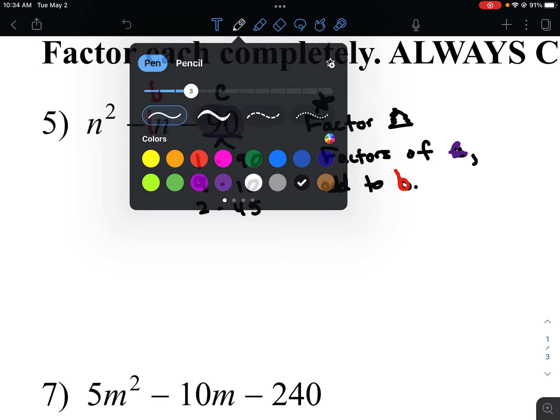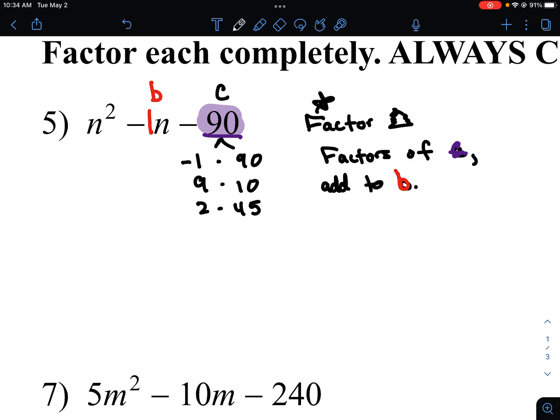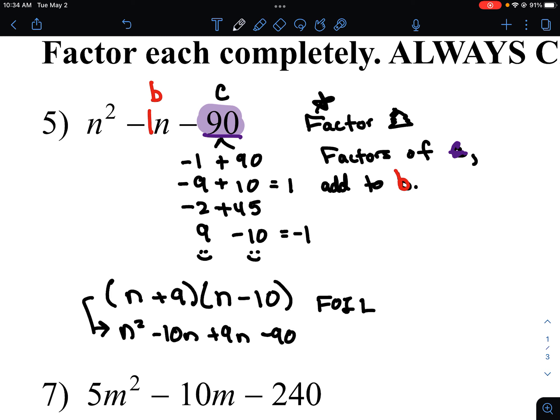that add to B. So we're looking for a combination that adds to negative 1. Now, one thing I didn't mention here is that we're dealing with negative 90, which means these factors, one's going to be positive and one is going to be negative. If you notice, negative 9 plus 10, that would equal positive 1. But if we would flip that around and do 9 and negative 10, that would equal negative 1. What that means is this is our factor pair. We would write this answer as N plus 9 and N minus 10. If you were to go through and do FOIL to check, you would end up taking N squared minus 10N plus 9N and minus 90, which would get you back where we started. Factors of C that add to B. That is the name of the game.